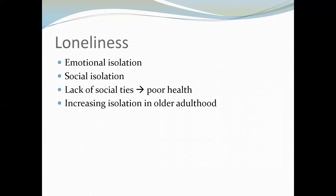An important component of social relationships in older adulthood is loneliness, which has two components. Emotional isolation involves the absence of emotional attachments — someone who has lost a spouse may feel lonely even around family and friends. Social isolation is the loss or absence of social ties, where there is truly no one to turn to. Lack of social ties is strongly linked to poor health. Social isolation and loneliness early on can predict cardiovascular risk later in life, so loneliness that begins earlier can have lasting health impacts.